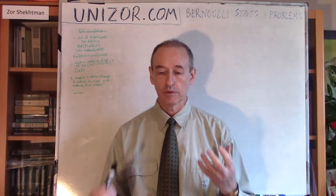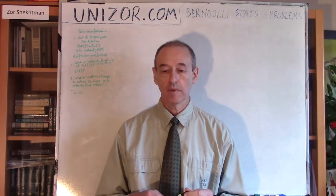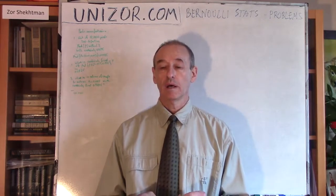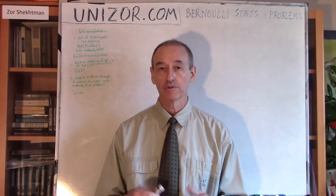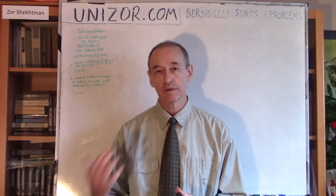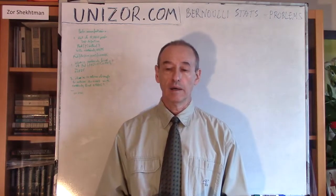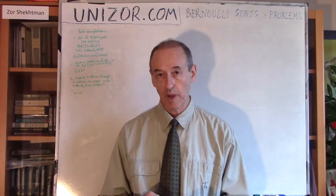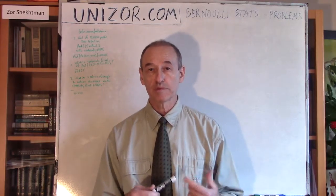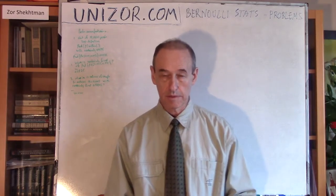There are three very important characteristics when you are talking about statistics: the volume of samples you have — like the number of experiments — the margin of error you would like to have, and the level of certainty, the probability that your evaluation is correct. These three statistical parameters are very much related to each other, and the three problems I am going to present today are exactly how to evaluate one parameter based on the other two.